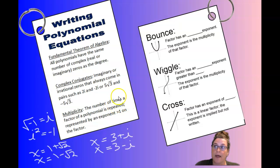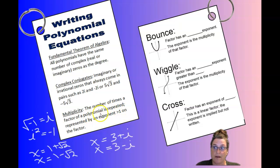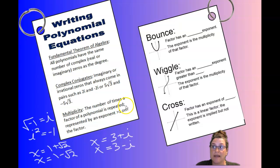This idea of multiplicity was learned in the math lab before these notes — that is not something you can skip. Do not try to do the notes before you've done that math lab on zeros and multiplicity because it's very important and we're not going to cover all of that here. Multiplicity is the number of times a factor in a polynomial is repeated, and that's represented by exponents greater than 1 on the factor.